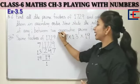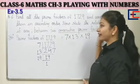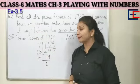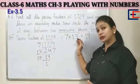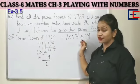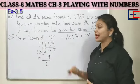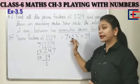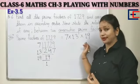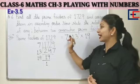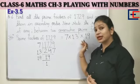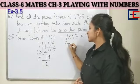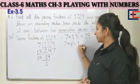Now we will see two consecutive prime factors and find the correlation between them. What is the relation between one consecutive prime factor and the next? Looking at 7 and 13: 7 plus 6 equals 13.